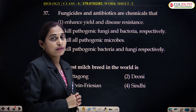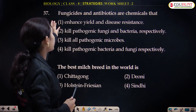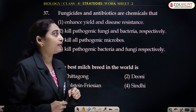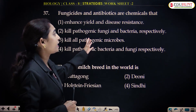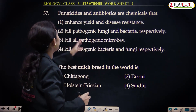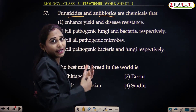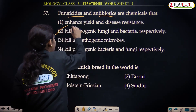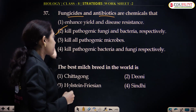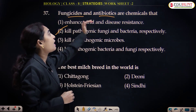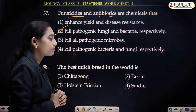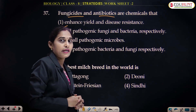Fungicides and antibiotics are chemicals: fungicides act on fungi and antibiotics act against bacteria, so they kill pathogenic fungi and bacteria respectively. We may get confused if the option says 'kill pathogenic bacteria and fungi respectively' — that is incorrect, because antibiotics act against bacteria and fungicides act against fungi. The correct option is that they kill pathogenic fungi and bacteria respectively.